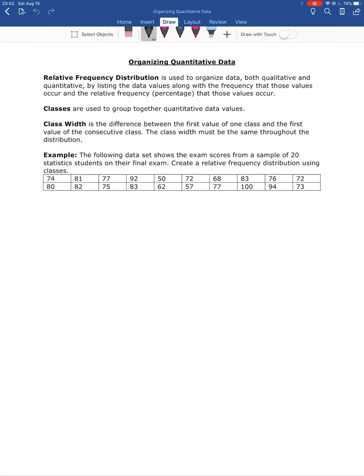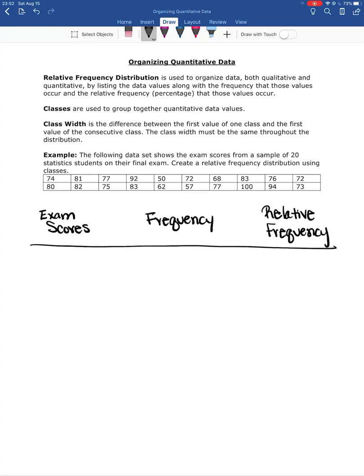Okay, so just like we did with the qualitative distribution, I'm going to start with three columns. The first column is going to be the exam scores. Then we're going to have the frequency and the relative frequency and draw a couple lines to separate these columns.